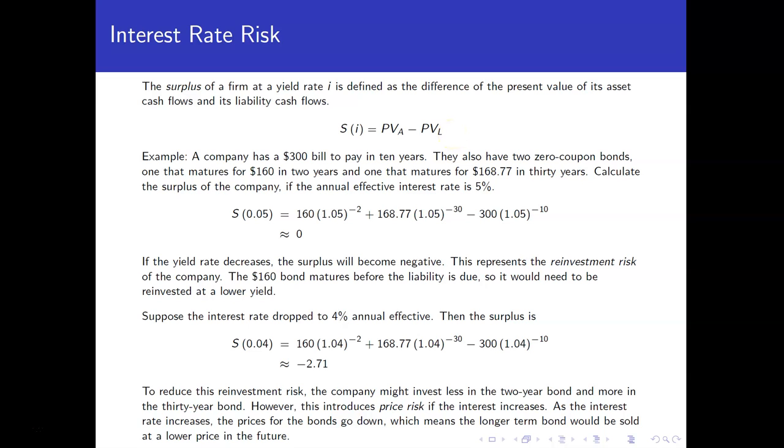So, let's look at a particular example. Let's say a company has a $300 bill to pay in 10 years. They have two zero-coupon bonds, one that matures for $160 in two years and one that matures for $168.77 in 30 years.